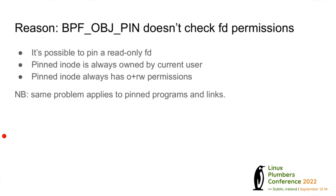Jakub proposes: when we open an object (do bpf_obj_get), create a binding for the map that has its own inode where we store the mode, and pass that to the verifier as a proxy object. This binding inode would capture the correct mode based on the file descriptor's initial access at open time.